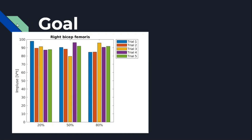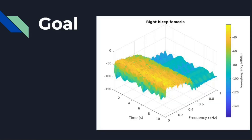As you can see, the first group covers 20%, 50%, and 80% of the entire EMG, and each bar represents each trial for both EMG of the right first family muscles. The last plot is STFT — Short Time Fourier Transform.